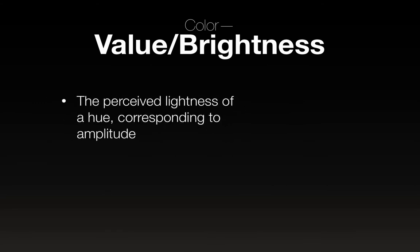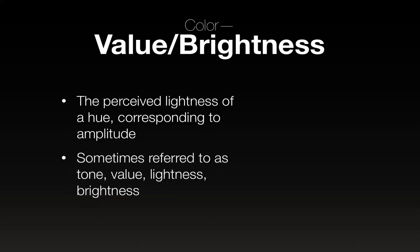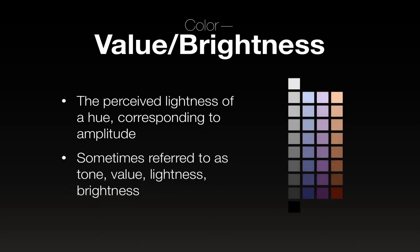Color value or brightness is the perceived lightness of a hue corresponding to amplitude — sometimes referred to as tone, value, lightness, or brightness. There's a little spectrum to look at showing different lightnesses of different hues: on the left that's just a grayscale, then we've got a blue, a purple, and an orange color.